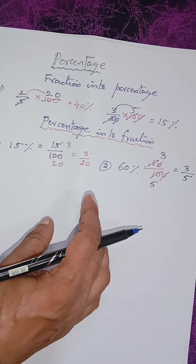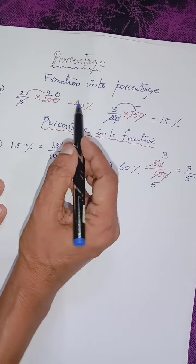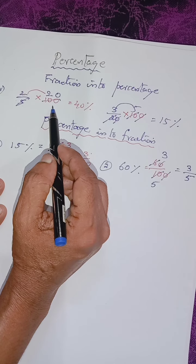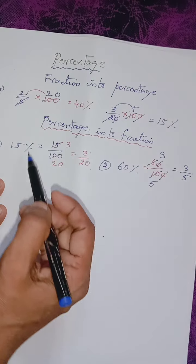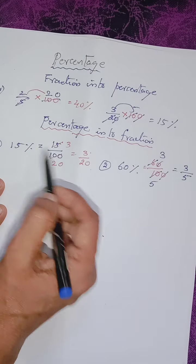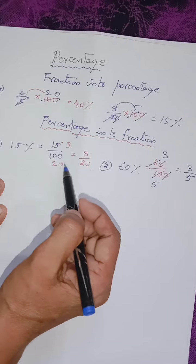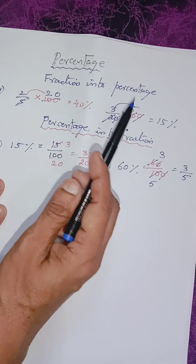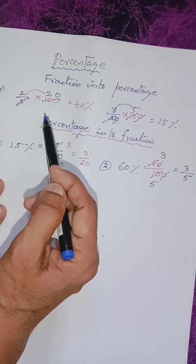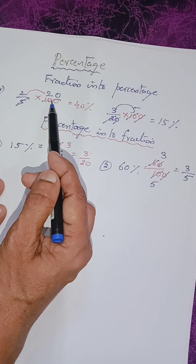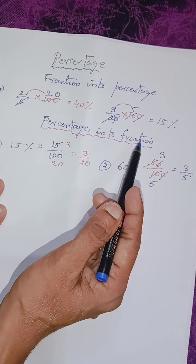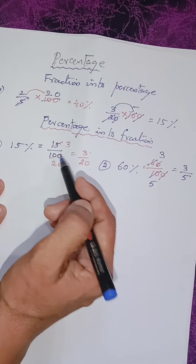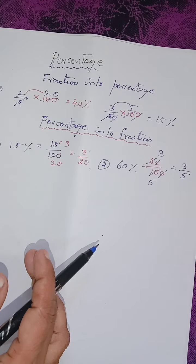So for converting into percentage we should multiply with 100, and for writing in fractional form we should divide by 100. Clear, children?